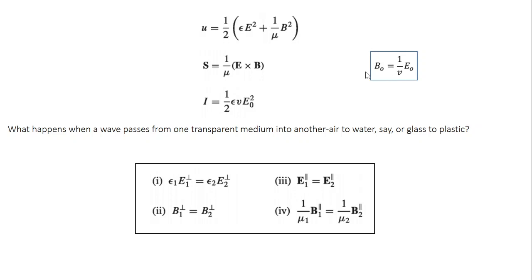And amplitudes of electric and magnetic fields are related through the equation B naught equal to 1 over V E naught. In the free space, you had B naught equal to 1 over C E naught. So this is quite straightforward.